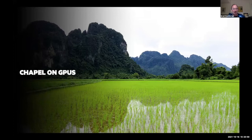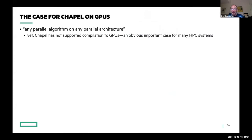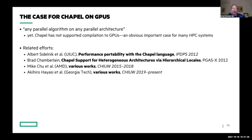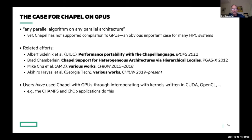Next, Chapel on GPUs. Chapel is designed for any parallel algorithm on any parallel architecture, but one embarrassing thing we've had to admit is we don't really do GPUs yet — and obviously GPUs are more and more important in HPC. It's not that this hasn't occurred to us — we've been doing work on Chapel and GPUs for almost 10 years, pioneered by Albert Sidelnik from UIUC back in 2012. But none of these efforts made it into master, so if you downloaded Chapel and tried to compile for GPUs, there was no support until our most recent releases.